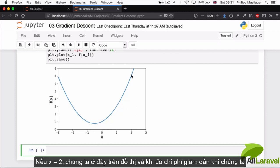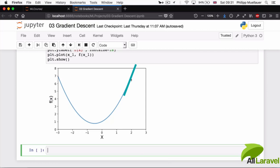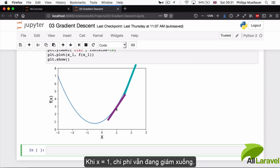So if x was equal to 2, if we were here on the graph, then the cost would be decreasing a lot as we're moving down. But when x is equal to 1, then that cost is still decreasing, but by not as much, because the line just isn't as steep.